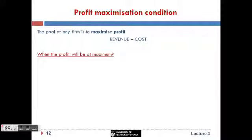We ended the previous part by observing that in a special example the optimal profit is reached at the output where marginal revenue and marginal cost are the same. That example is of course not a scientific way of proving something. We would like to have a convincing general argument for why marginal revenue equal to marginal cost is the condition for profit maximization.